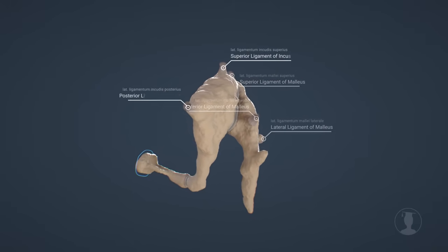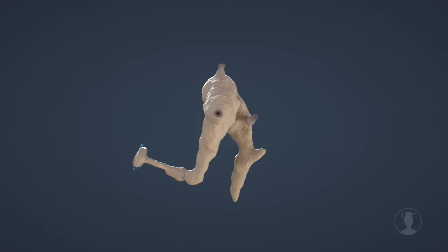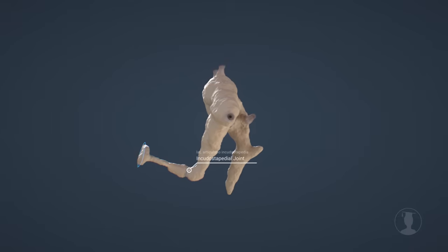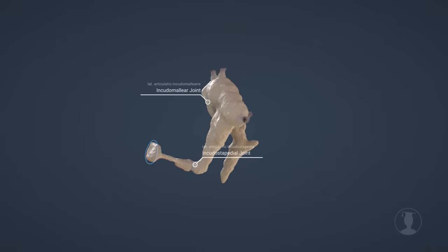The malleus possesses three ligaments. The incus has two. There is a joint between the incus and the stapes, as well as between the malleus and the incus, which are equipped with cartilage. Ligaments hold the bones together.